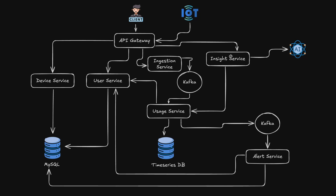The insights service will be called by the client to get usage insights and energy-saving tips through an AI model. Finally, the alert service will be triggered by a scheduled job in the usage service — if a threshold set by the user is exceeded, a message goes onto the Kafka topic, the alert service picks it up, gets the user's email, sends out the email, and saves each sent email as an audit entry in the MySQL database.